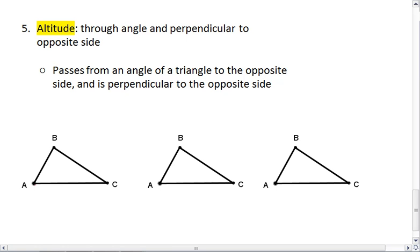So now we're going to, again, start with an angle. But instead of bisecting the angle, what we're going to do is draw a line straight across and perpendicular to the opposite side.